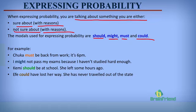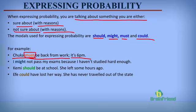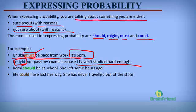For example: Truecar must be back from work — it's 6pm. Here we are sure that Truecar must be back from work, and the reason is that it is 6pm, so we use the modal must. I might not pass my exams because I haven't studied hard enough — here we are not sure we would pass, and the reason is not having studied enough.